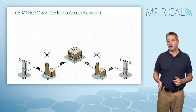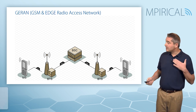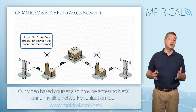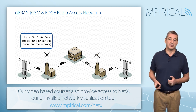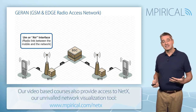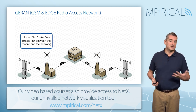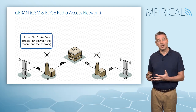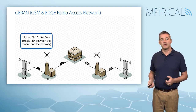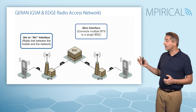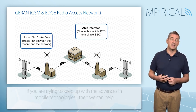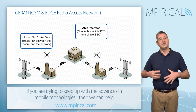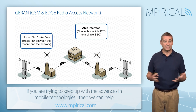From the mobile phone we move into the network and on to the GRAN — the GSM EDGE Radio Access Network. We connect our phone to the GRAN via the Um interface, or air interface. From the base transceiver stations we connect to the base station controller via the Abis interface.